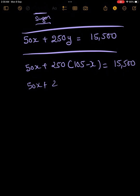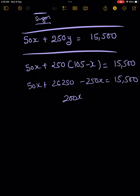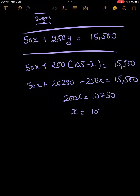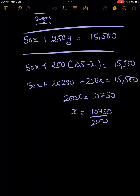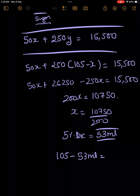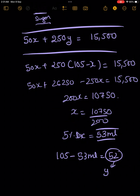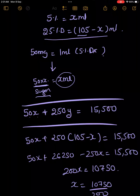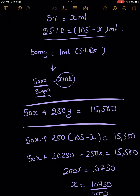Working through the math, my 5% dextrose volume x comes out to be 53 ml. From this I can easily calculate y: 105 minus 53 ml equals 52 ml. So my 25% dextrose is 52 ml. By giving 53 ml of 5% dextrose and 52 ml of 25% dextrose in this concentration, I'll be able to give a GIR of 6 mg per kg per minute — delivering a total sugar of 15,500 mg.